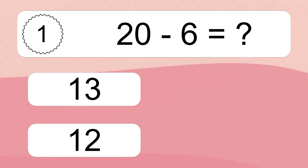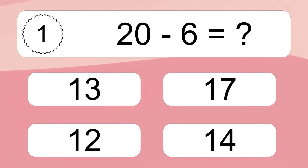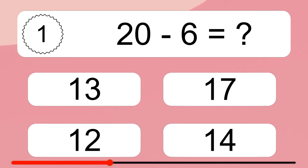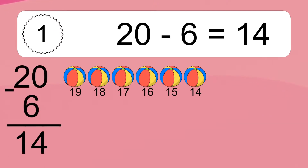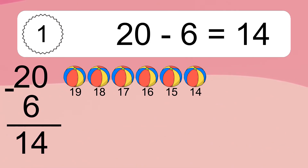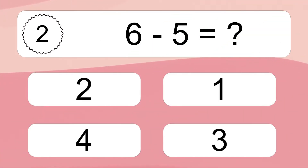20 minus 6 equals what? 20 minus 6 equals 14. Let's count it. 19, 18, 17, 16, 15, 14.